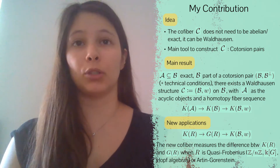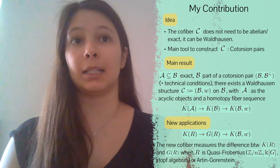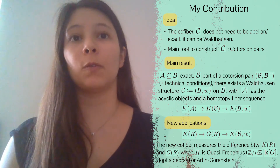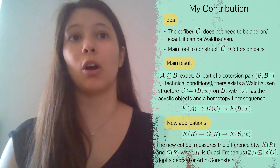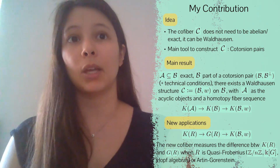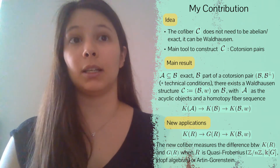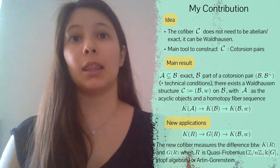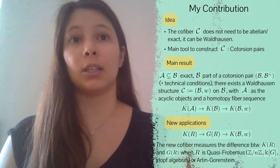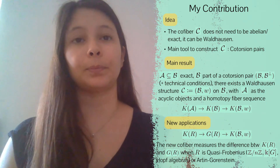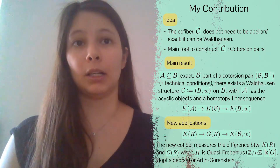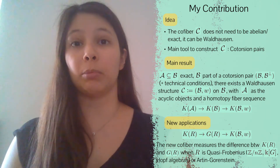My main result is that when A and B are exact and B is part of a cotorsion pair, then we can construct a Waldhausen structure on B — meaning we can define a class of weak equivalences in B having A as the class of acyclic objects — such that this Waldhausen category fills in the role of the co-fiber. Since we don't require the Serre condition anymore, this produces new applications.